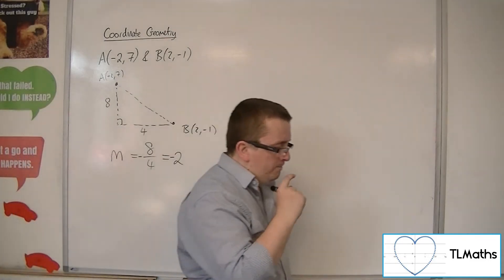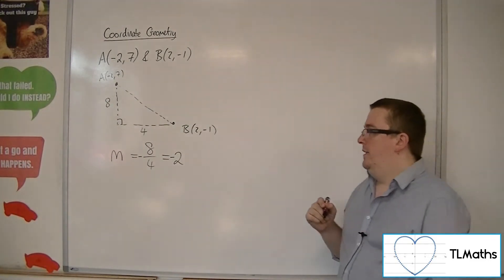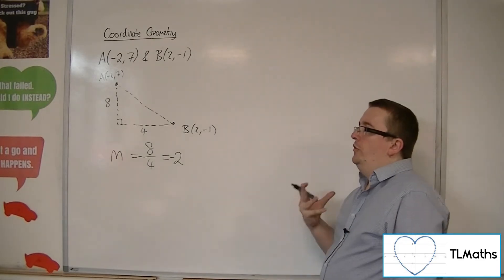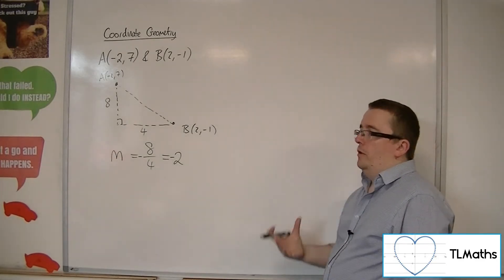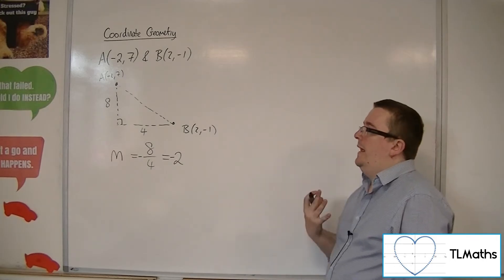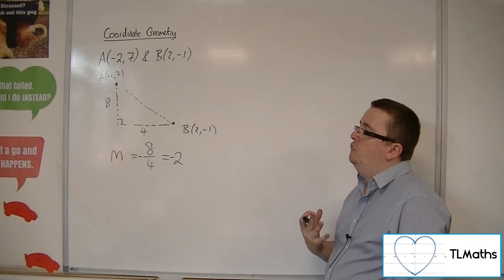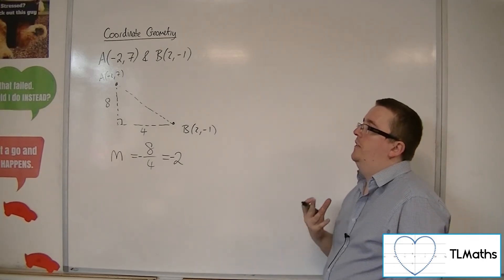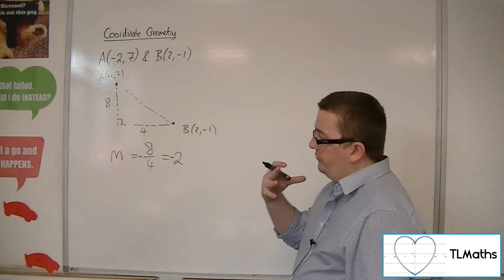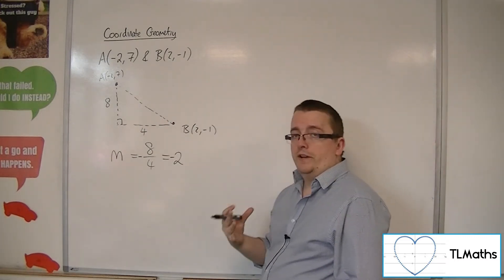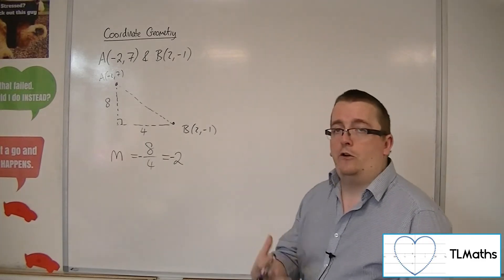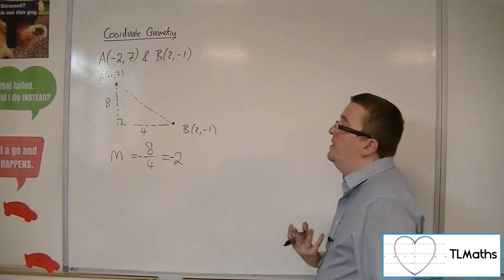So if you're going to use this method of drawing a little diagram, you must pay attention to the diagram you've drawn and think: because my diagram is showing a negative gradient, the answer should be negative as well. In order to avoid this error, in the majority of cases you really want to get into the habit of going straight in with a calculation to find M.